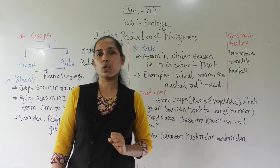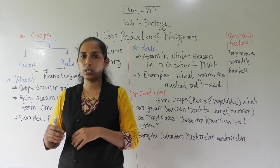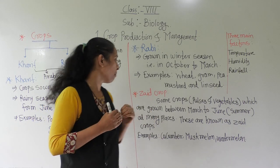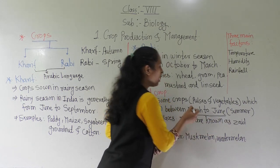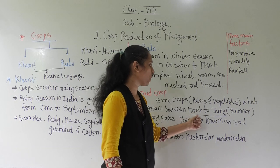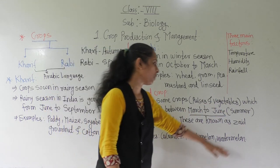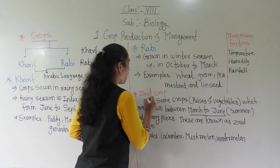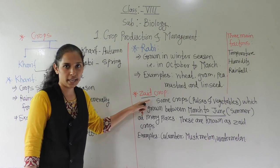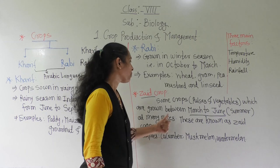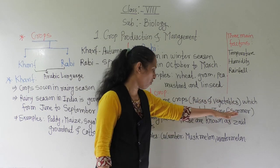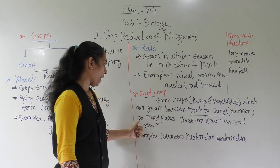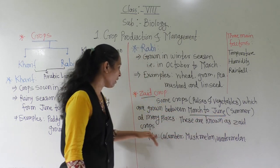But there is one more type of crop — crops that are not dependent on rainwater and are not grown in winter season either. There are certain crops which are grown during the month of March to June — that is the summer season. These crops are called Zaid crops. Some crops like pulses and vegetables which are grown between March to June, during the summer season, are known as Zaid crops.